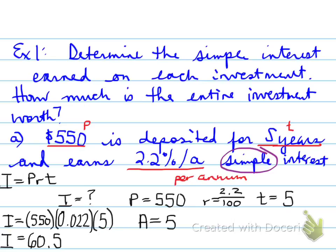In order to find the final value of how much the entire investment is worth, you have to take 550 and add the interest, the I, so that's a P plus I, and that gives you $610.50.